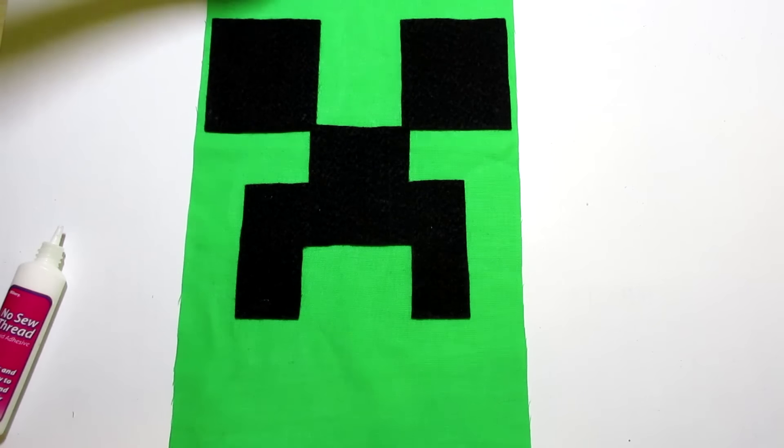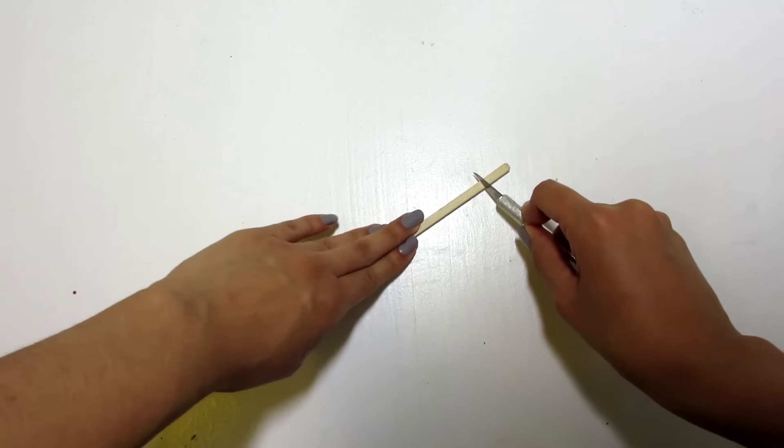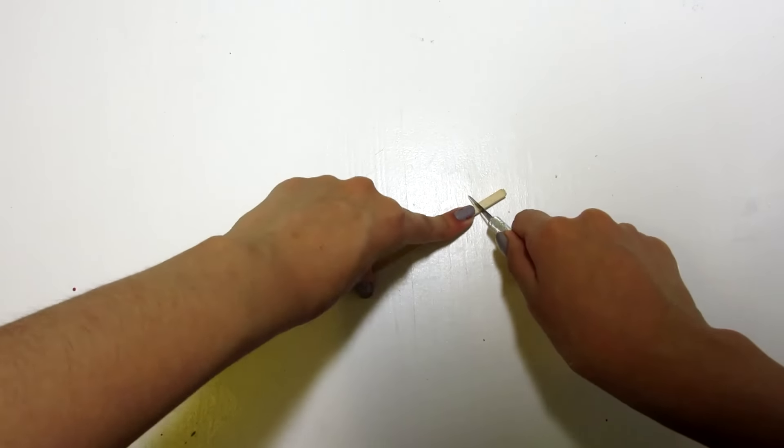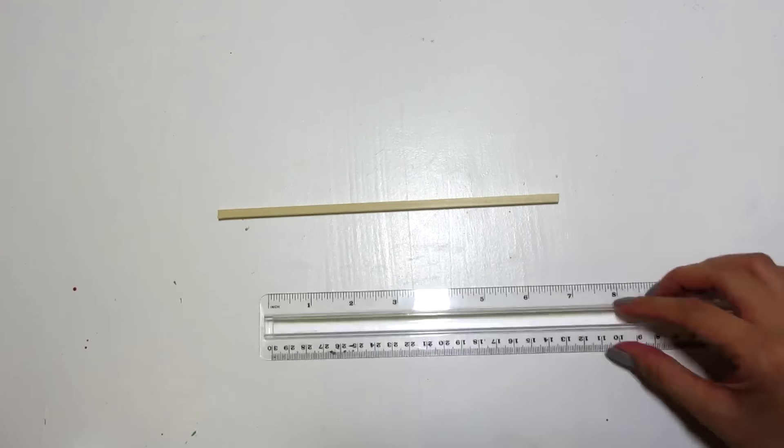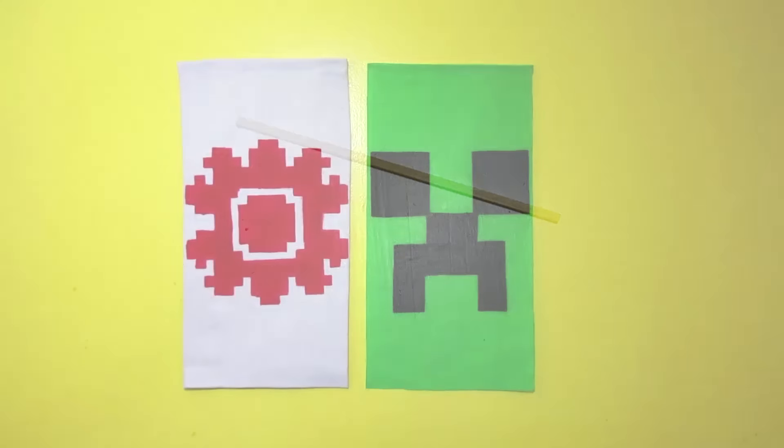While we wait for the glue to dry, you want to go ahead and grab your wooden strip and your X-Acto knife. Once again, we're going to cut this down to 8 inches.